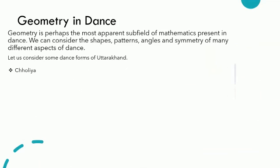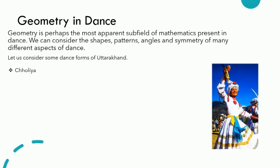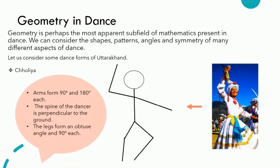Firstly, Cholia. This is an image of a dancer performing Cholia. Let us look at the simplified version. The arms of the dancer form an angle of 90 degrees and 180 degrees each. 180 degrees means a straight line. The spine of the dancer is perpendicular to the ground, and the legs form an obtuse angle and 90 degrees each. These are all the observations which could be done just by looking at a single dancer.